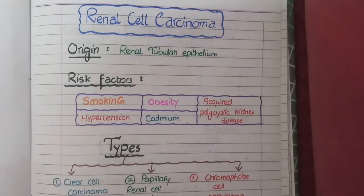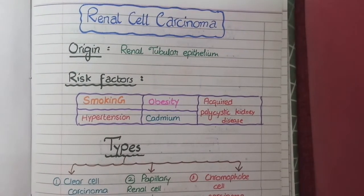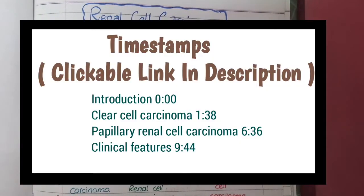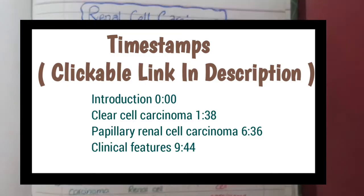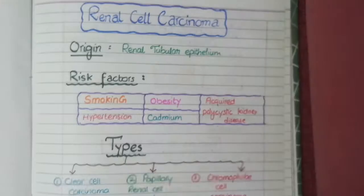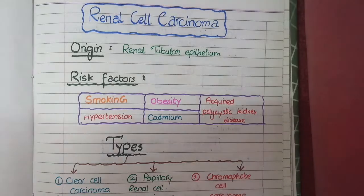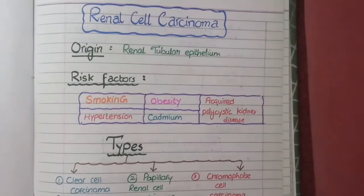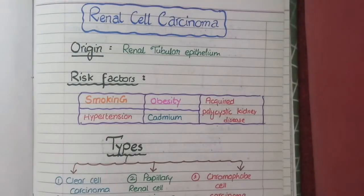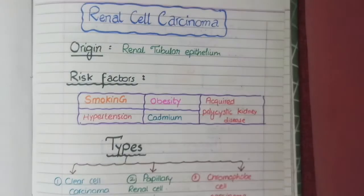In this video, we will study the pathology of renal cell carcinoma. Firstly, we will study its origin, risk factors, and its types. Then we will study the pathogenesis and morphology of each of the types in detail. So let's begin.